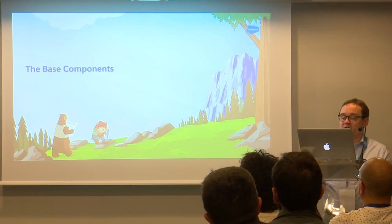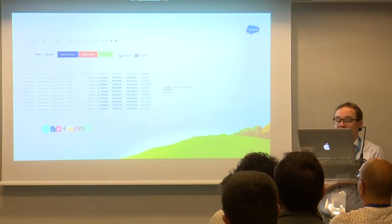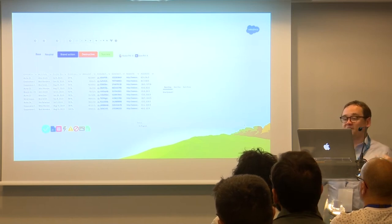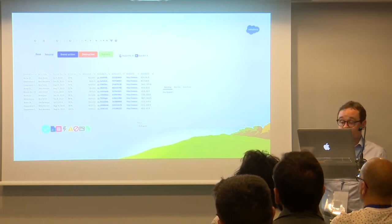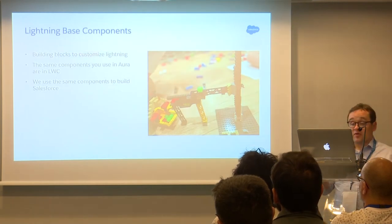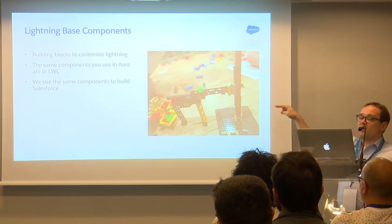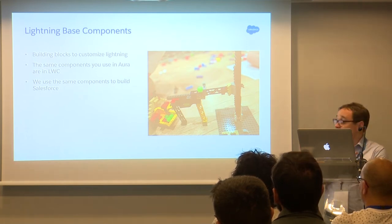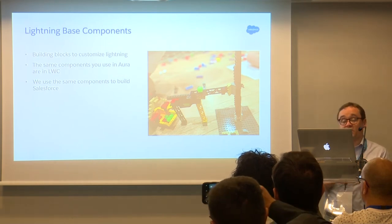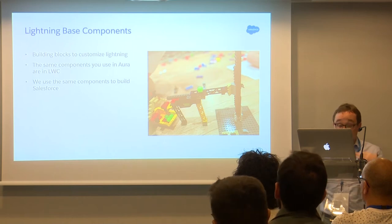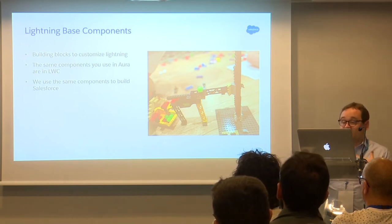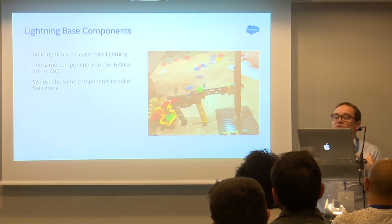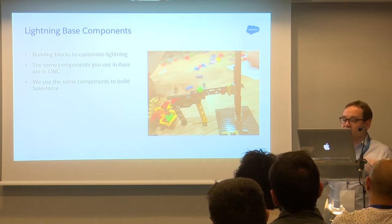So this whole talk was supposed to be about base components. What are the base components? If you've used Aura, you've seen them before. We have all these little pieces that allow you to build very quickly a nice, pretty application that integrates with Salesforce fairly seamlessly and helps you build things quickly. Lightning base components in LWC are little building blocks — it's like Legos — pieces you can use to assemble and build an application. They're the same base components that already exist in Aura — all of them. And we use them internally to build Salesforce itself.